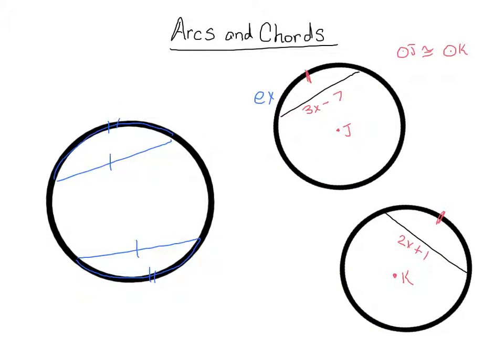So circles J and K are congruent to each other, and we also know in this example that this arc length is the same as this arc length. Because this chord is corresponding to that arc and this chord is corresponding to that arc, that means these chords have to actually be equal in length. So that is what we use to figure out what X is in this case.